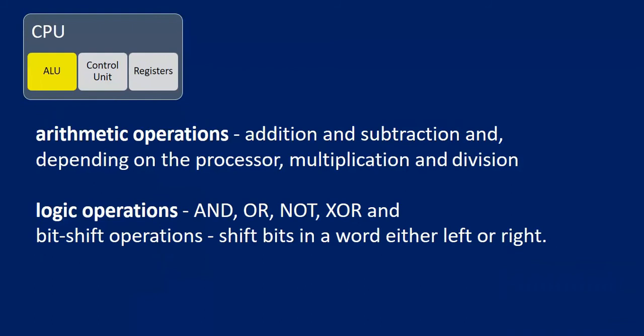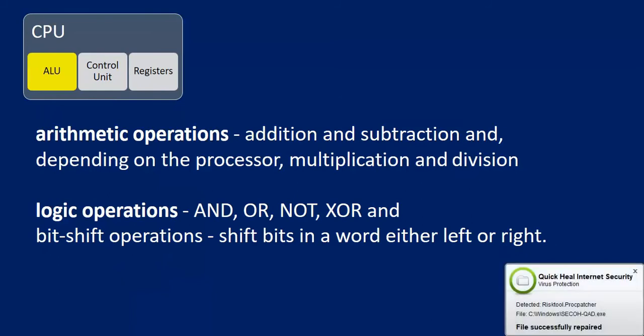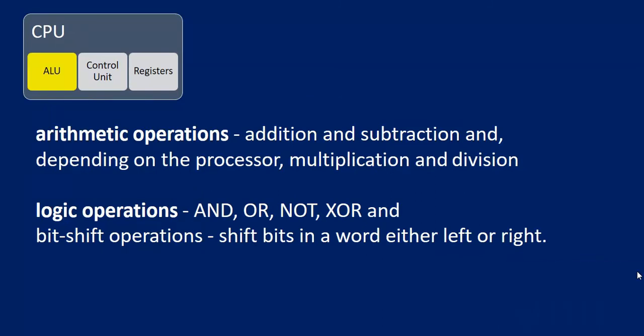The ALU is the Arithmetic Logic Unit. It does mainly two things: arithmetic operations and logical operations. Arithmetic operations include addition, subtraction, and depending on the processor, multiplication and division. Logical operations include AND, OR, NOT, XOR, and bitwise operators — all kinds of logical operations.